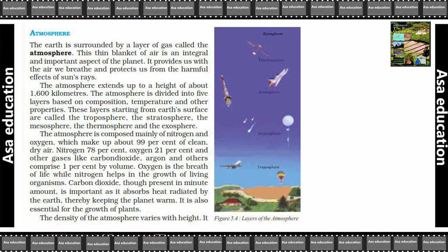Oxygen is the breath of life, while nitrogen helps in growing living organisms. Oxygen jo hai, woh humari life ka hissa hai — hum saans lete hai oxygen se — jabki nitrogen chote organisms ko grow karne mein madad karti hai. Carbon dioxide, though present in a minute amount, is important as it absorbs heat radiated by the earth, thereby keeping the planet warm. Carbon dioxide khali 1% volume ke hisaab se hi available hai, lekin woh jo bhi heat earth se nikalti hai usse absorb karti hai aur is wajah se humari planet ko garam rakhti hai. It is also essential for the growth of plants. Yeh CO₂ plants ke growth ke liye bhi bahut zaroori hai.